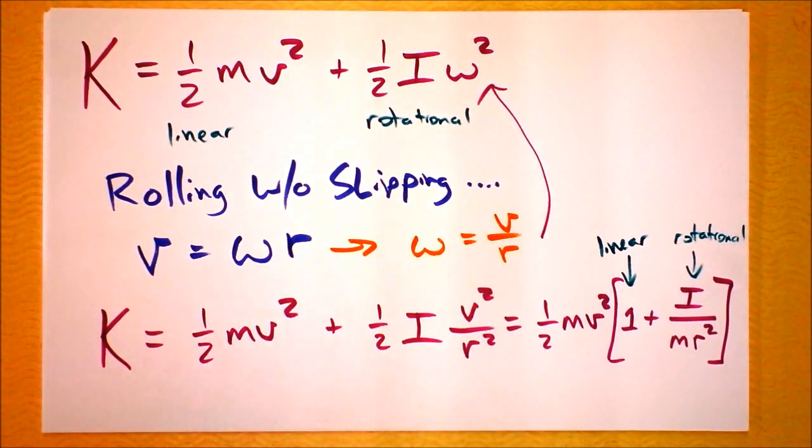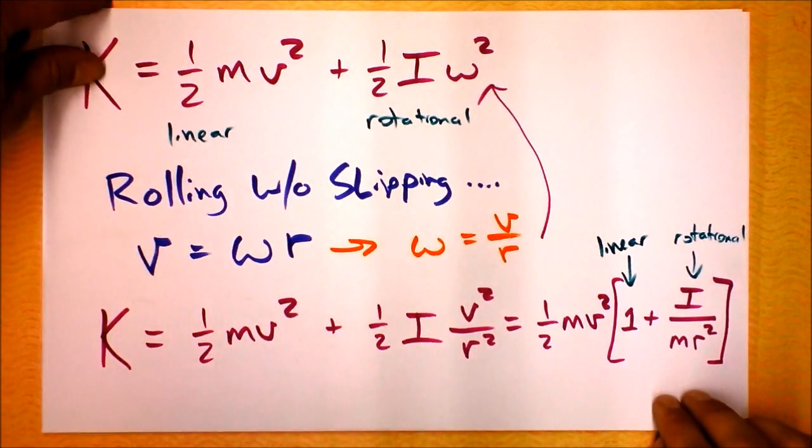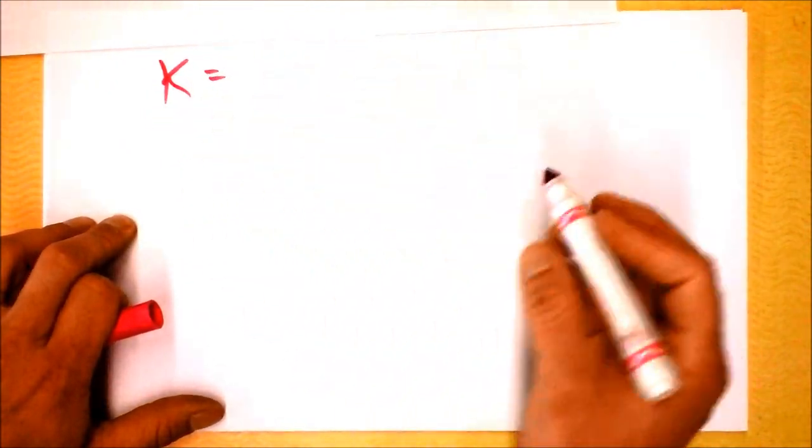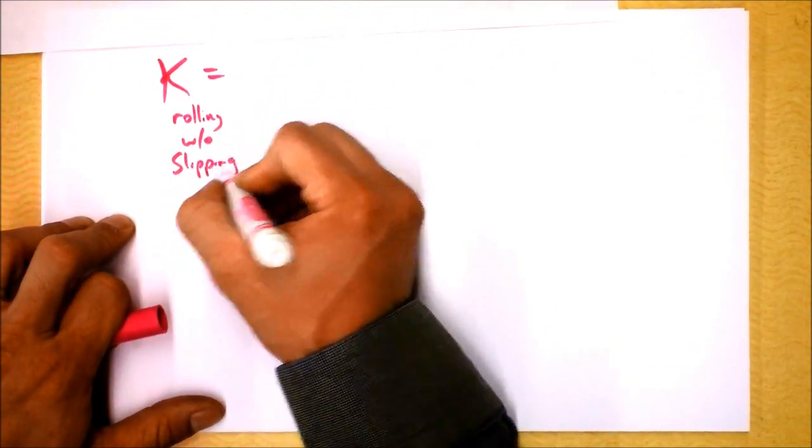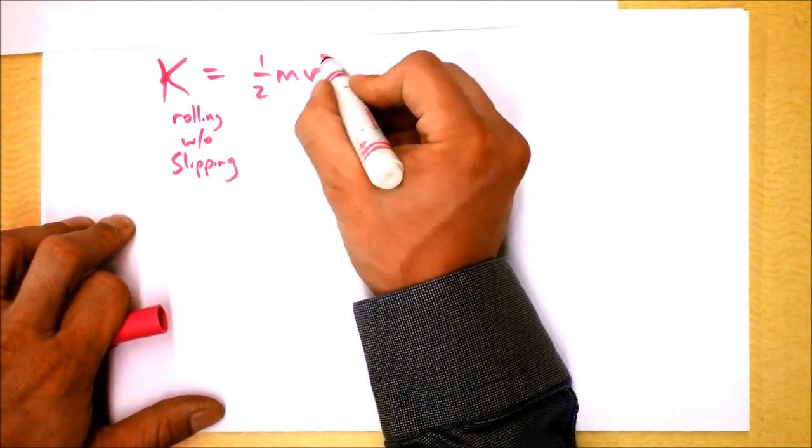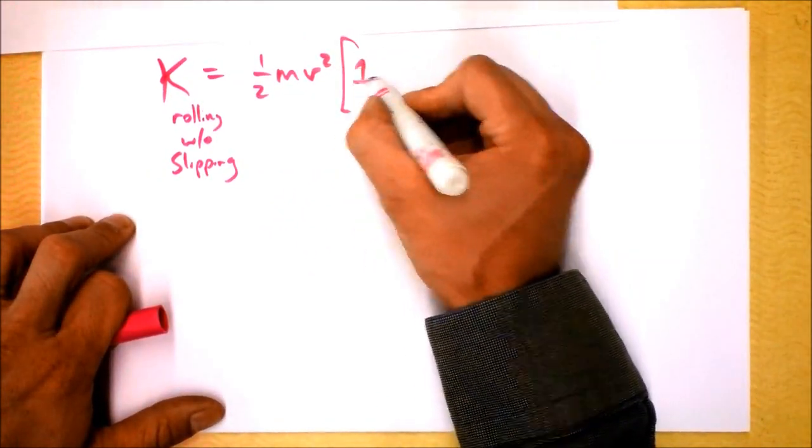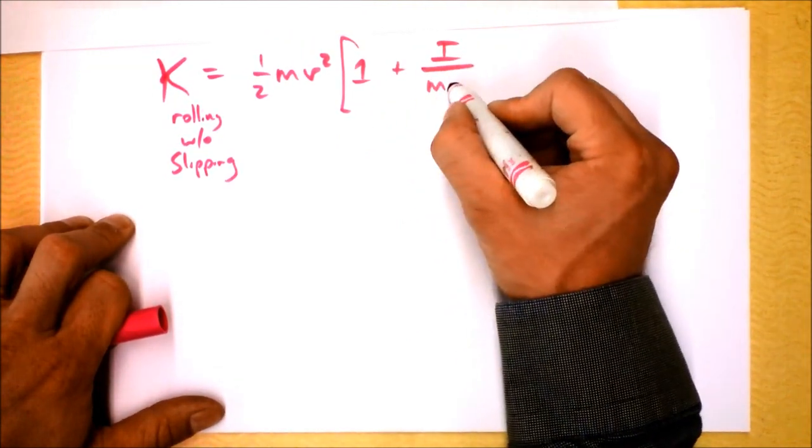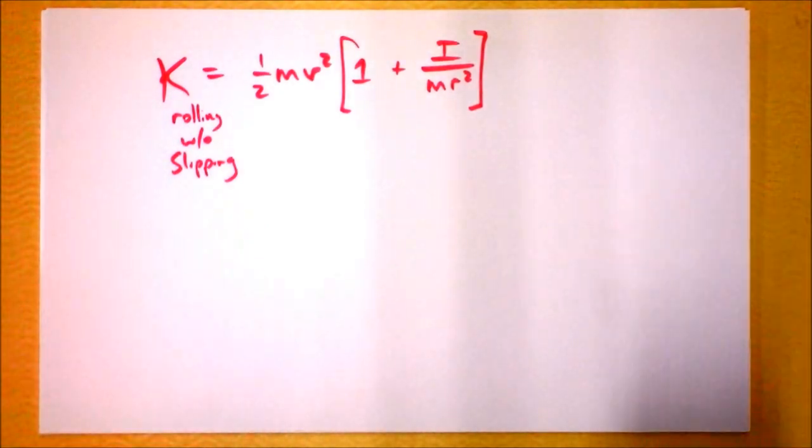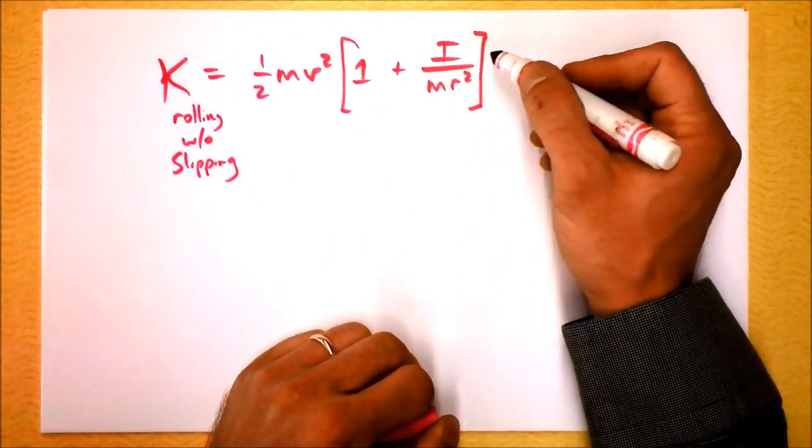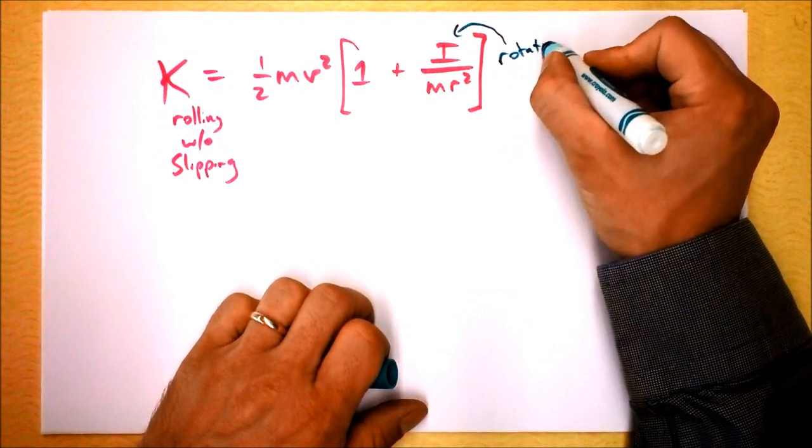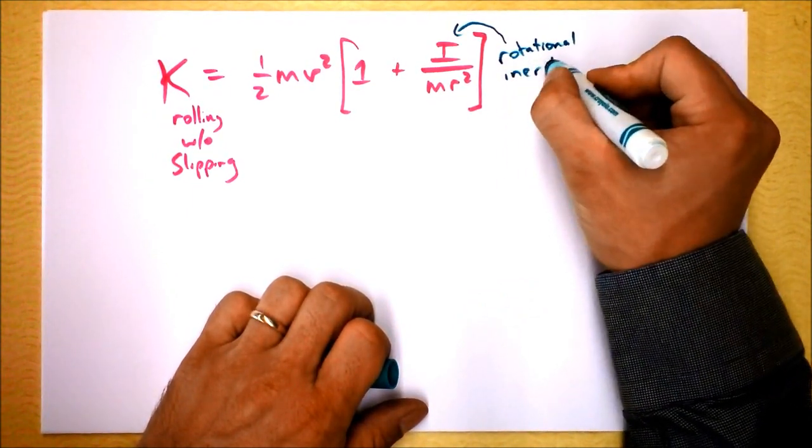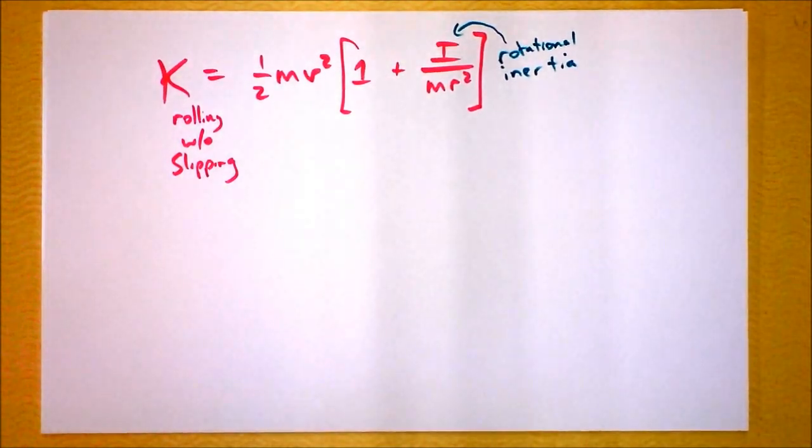And so those two forms of energy are present in a very interesting way. I want to write this equation again and I want to think about what it could mean. We are saying that the kinetic energy of an object rolling without slipping is equal to one-half mv squared times one plus I over mr squared. Interesting. I is this moment of inertia, rotational inertia for an object.